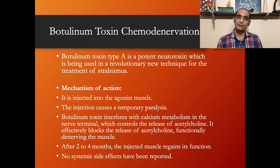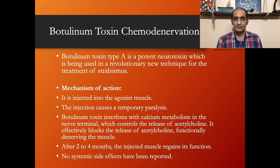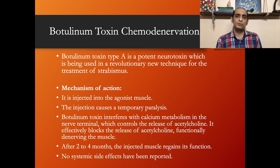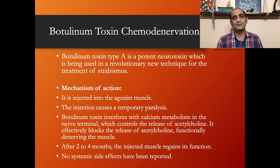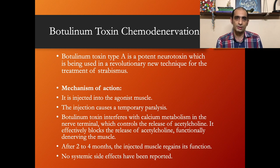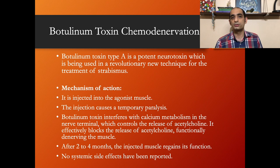Botulinum toxin interferes with calcium metabolism in the nerve terminal, which controls the release of acetylcholine, effectively blocking its release and functionally denerving the muscle. After two to four months, the injected muscle regains its function, but the prolonged period of paralysis allows contracture and shortening of the antagonist, which is believed to be responsible for the prolonged long-term alterations in ocular alignment.